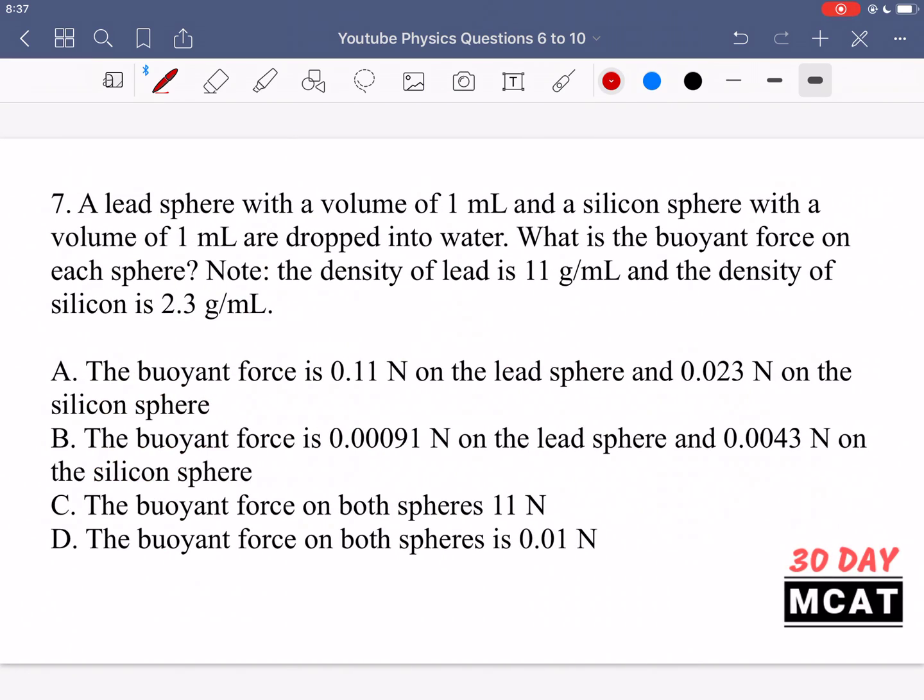In question 7, it says a lead sphere with a volume of 1 milliliter and a silicon sphere with a volume of also 1 milliliter are dropped into water. What is the buoyant force on each sphere? Note the density of lead is 11 grams per milliliter and the density of silicon is 2.3. So we have a lead sphere with this volume and we have a silicon sphere with this volume, and they're dropped into water. That is our liquid that we're in. We're also given the density of lead and then density of silicon as well.